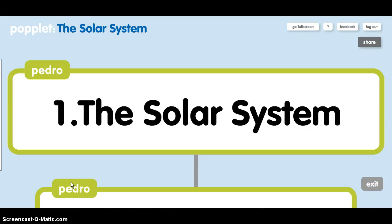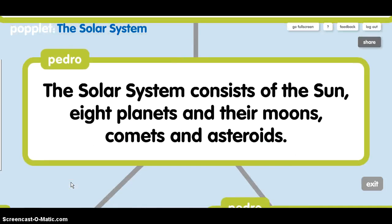The solar system. The solar system consists of the sun, eight planets, and their moons, comets, and asteroids.